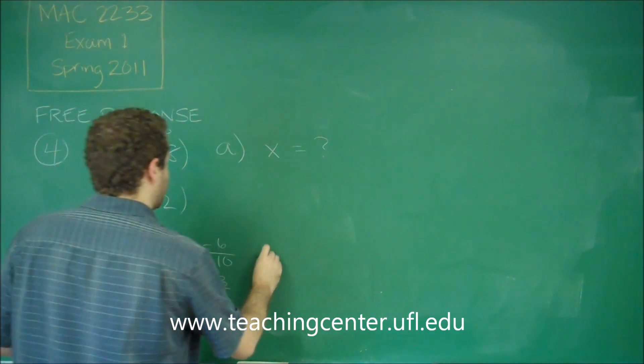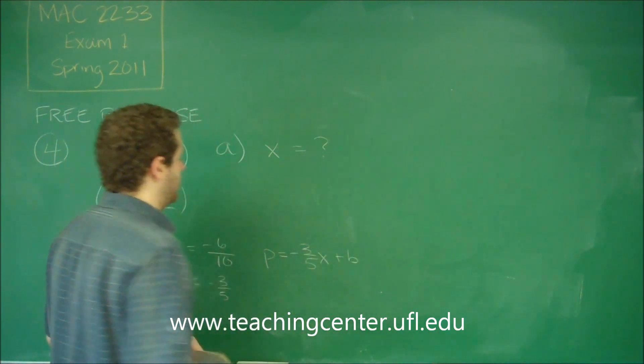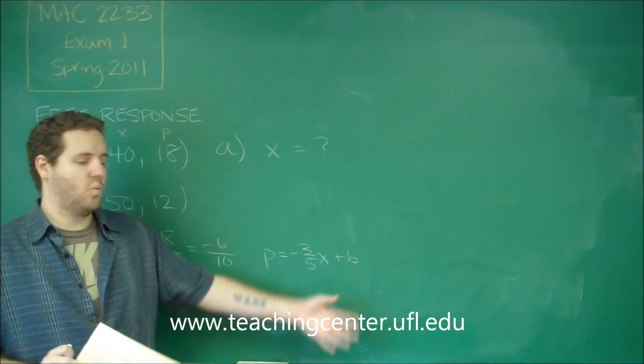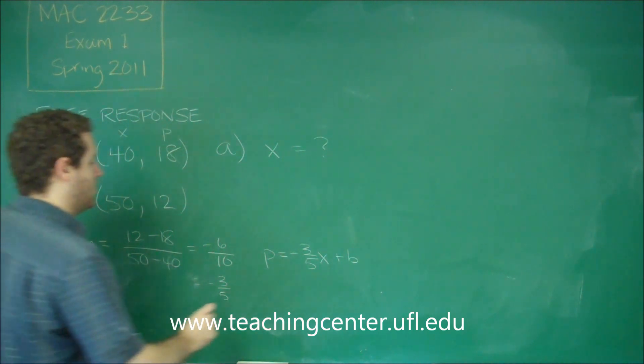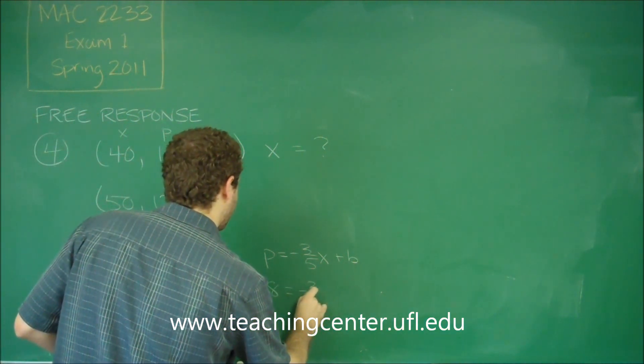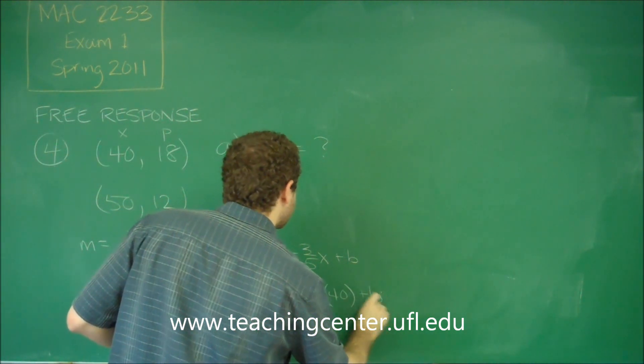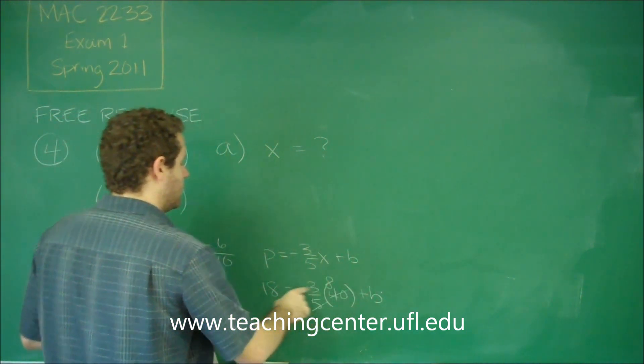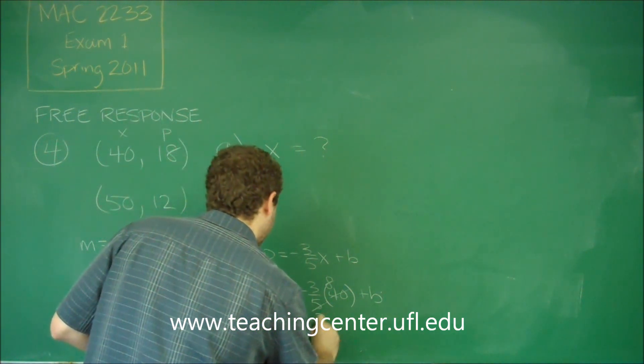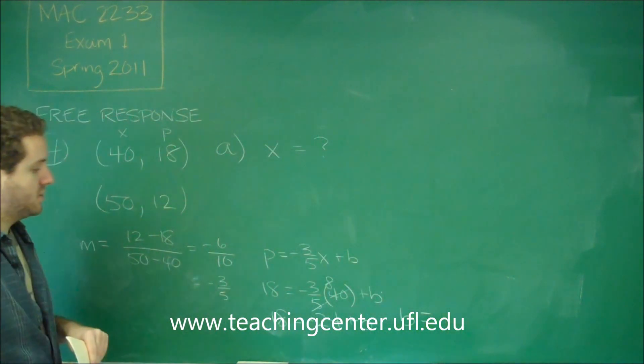And our equation would look something like this. P equals negative 3 fifths X plus B. We don't know what our Y intercept is. But we have points we could use and plug in and we could figure that out. Let's just use the first point. So, if P is 18, that means our X is 40 plus B. 40 over 5 would give you 8. So, we have 18 equals negative 24 plus B. So, that tells you that B is going to be 18 plus 24. So, that's going to be 42.